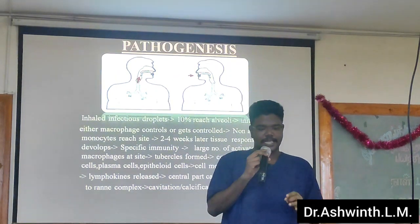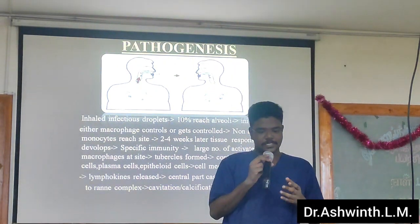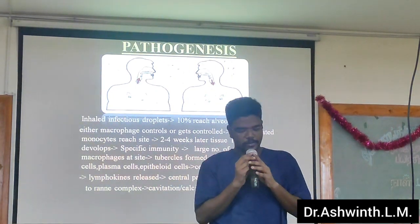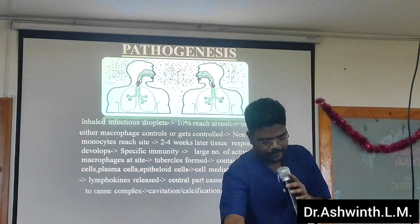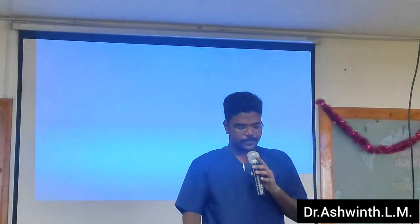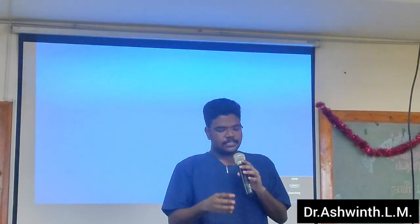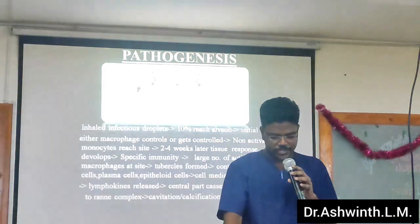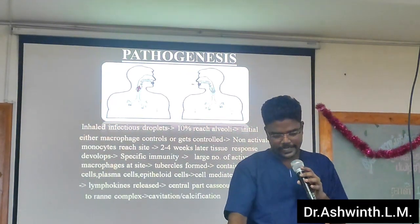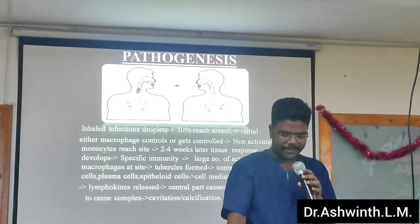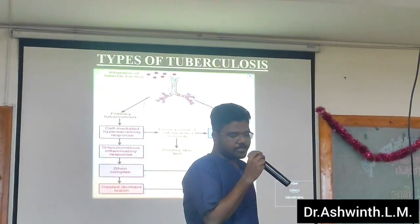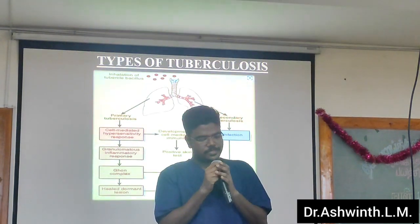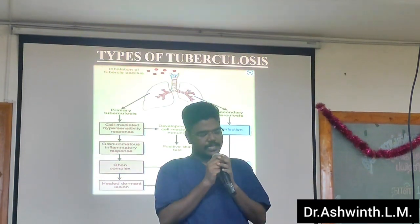The tubercle contains Langhans cells, plasma cells, epithelioid cells, etc., and then cell-mediated immunity comes into play. If the caseation occurs, the central part goes into necrosis and it may calcify or liquefy. There are two types of tubercles: primary and secondary.